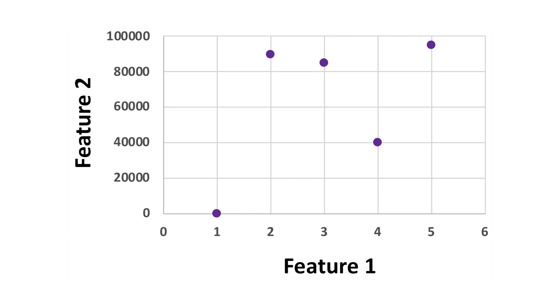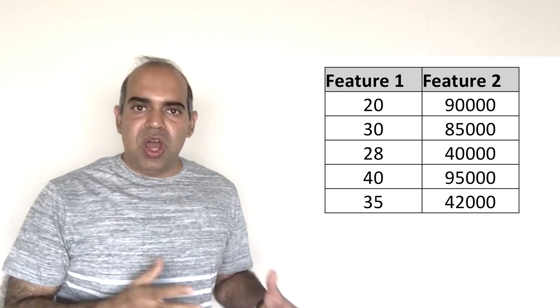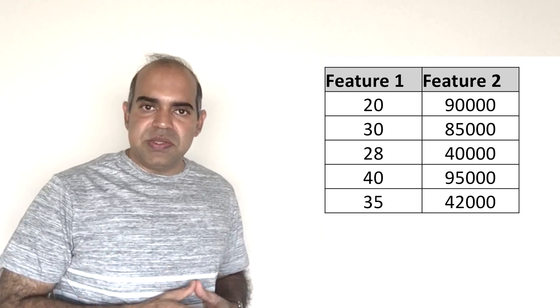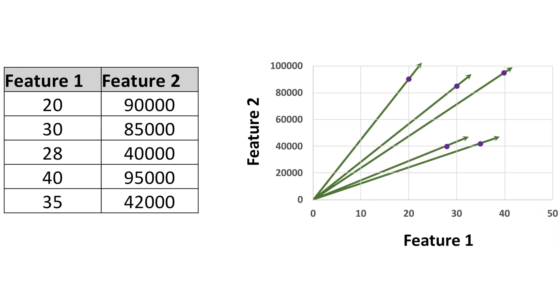The vector formed by a data point has the direction pointing from the origin toward the data point. The magnitude of the vector is considered to be the distance between the origin and the point. Consider that we have this data set. We have two features in the table and five objects or five data points. Each of the five data points is considered a vector — a vector of two features. All five vectors are drawn in this figure. Notice that the vectors have a direction from the origin toward the data points.